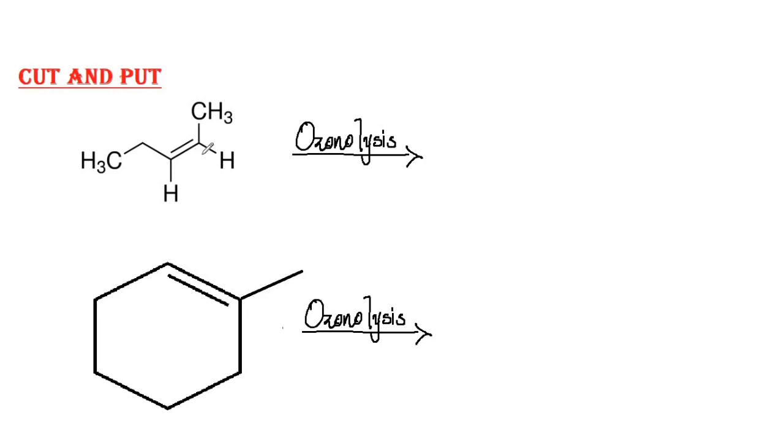Now let's try the cut and put method for these two examples given. For the first one, cut the double bond, put oxygens across it. So the formed products will be CH3CH2CHO and CH3CHO, which is basically propanal and ethanal.